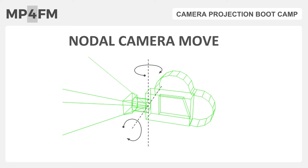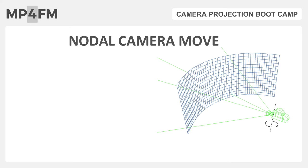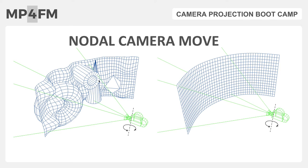A nodal camera move is where the camera tilts or pans in a way that doesn't cause any parallax in the image — we're not seeing relative movement from object to object in the distance. The nodal point of the camera is where the lens meets the body, and as long as it's turning at that point, you have a nodal camera move. Because we're working with things in the distance, it doesn't actually have to be a true nodal camera to be treated the same way. One quick thing about nodal camera moves: it doesn't matter what you're projecting on, because there is no parallax.